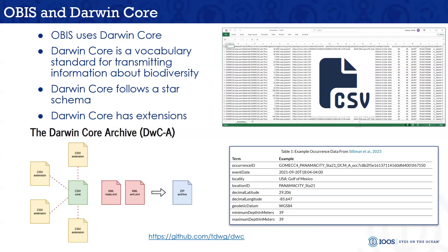What I'm showing on the right-hand side is what a basic occurrence looks like — you have an identifier, a specific date, a latitude and longitude, and maybe some depth information about where it was collected. I want to highlight that I put a GitHub link at the bottom to encourage everybody that these standards are built by the community. If you have problems with the standards or they're not meeting your needs, there are places to go out and have those conversations. These aren't necessarily set in stone — they can be advanced further.